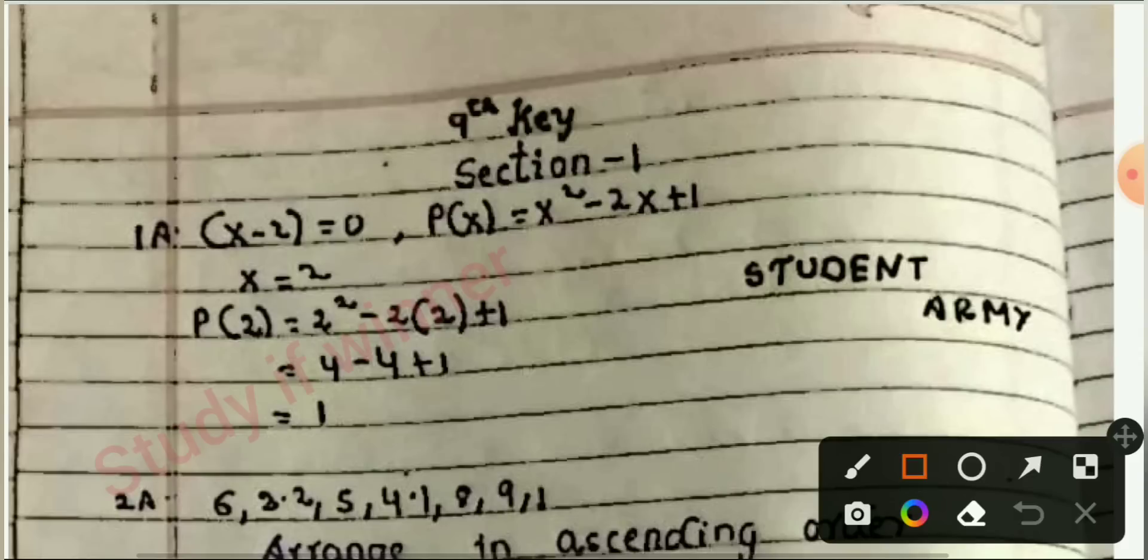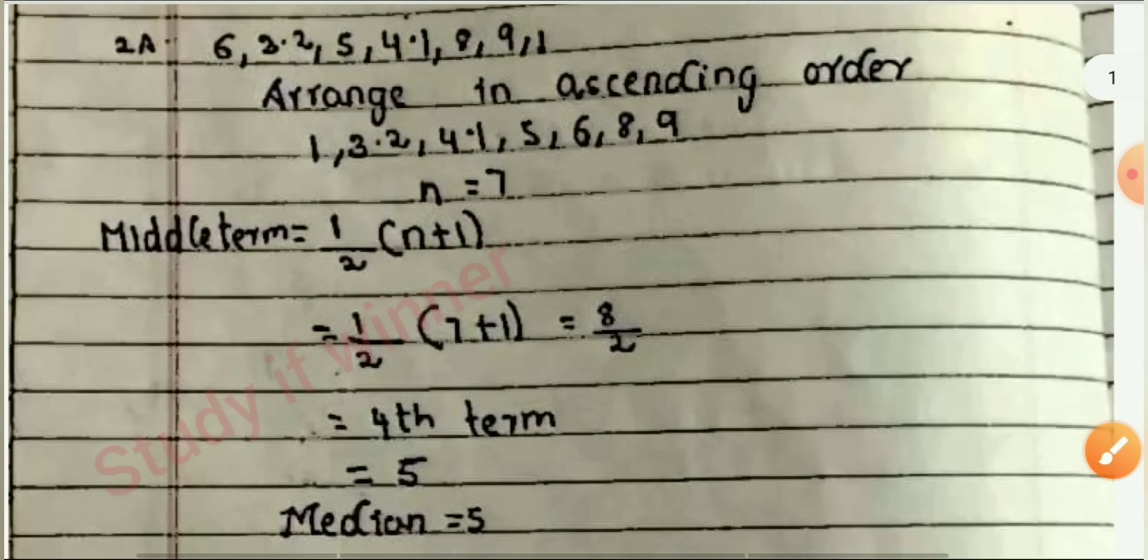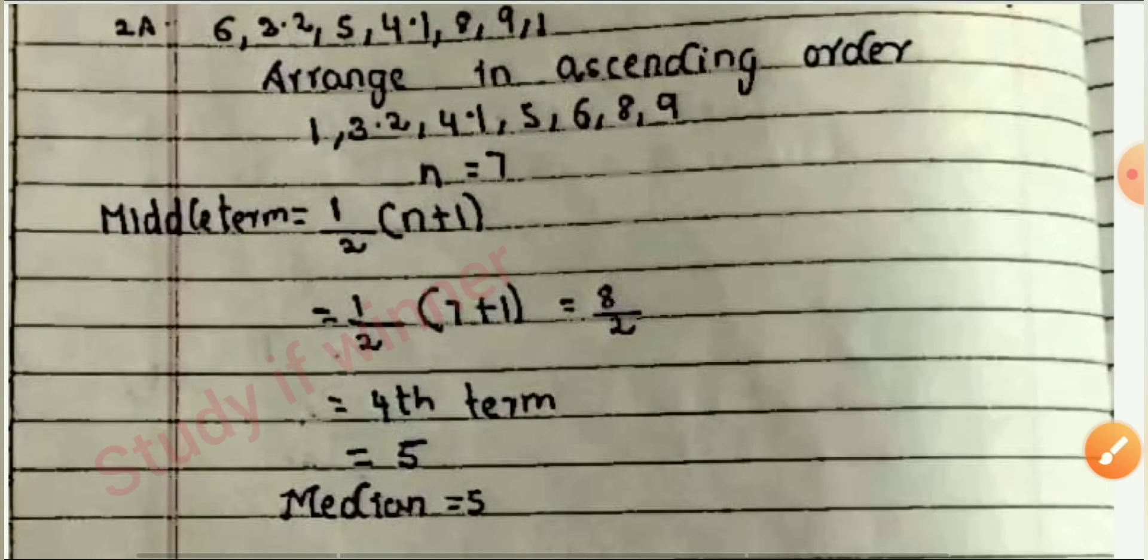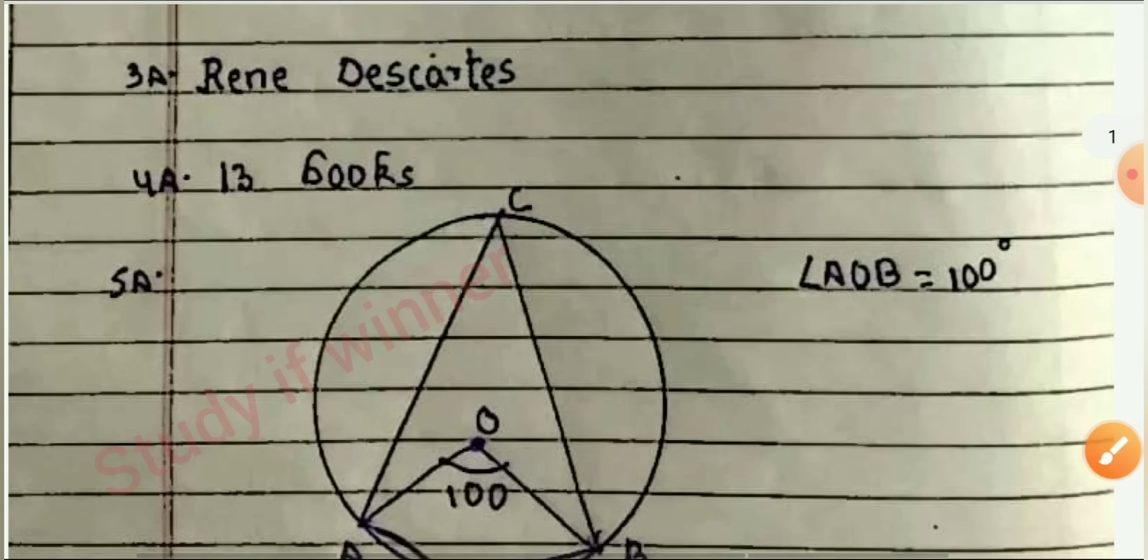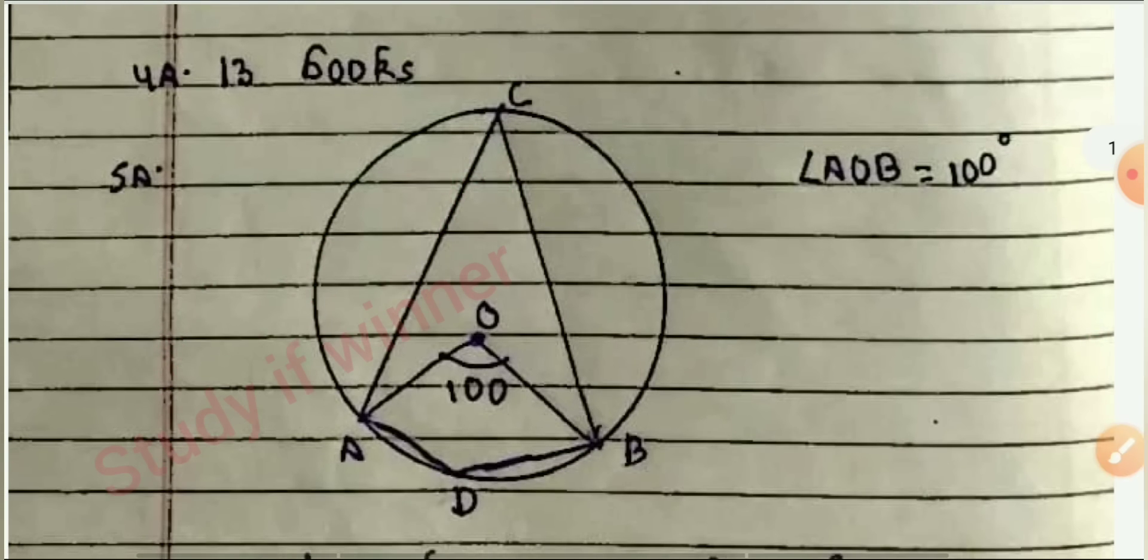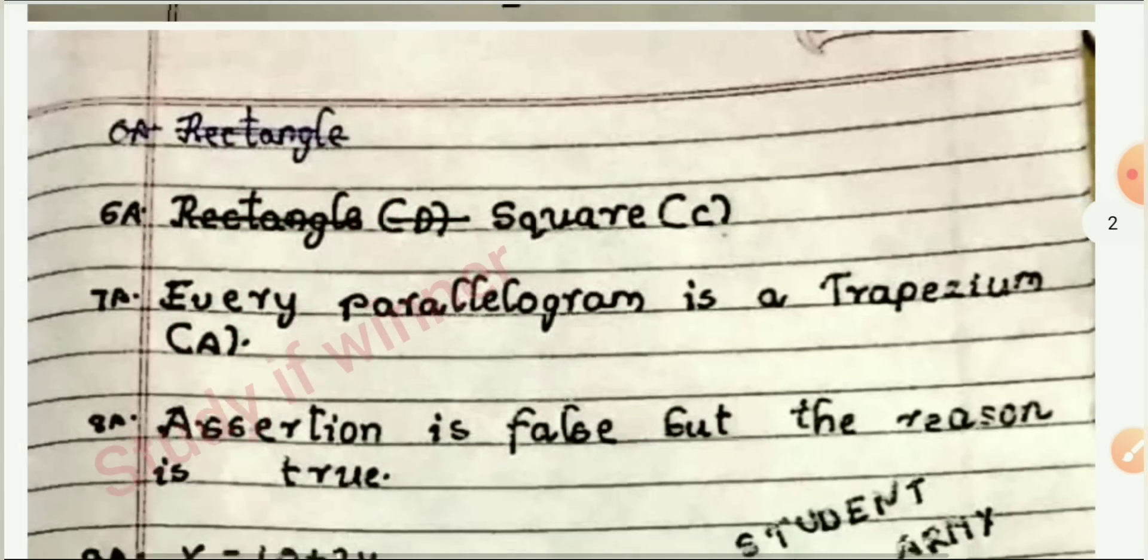You can see this is your ninth class answer sheet. You can see your section one and this is your first answer, then your second answer, then you can see your third answer, fourth answer, and fifth answer. All answers you can see. All answers are very important so complete this question answer.